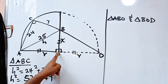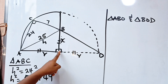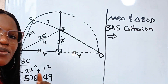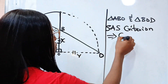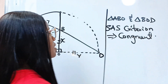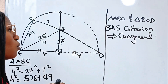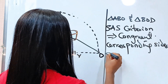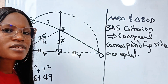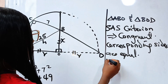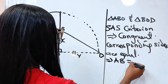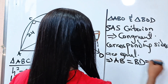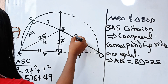Since the two triangles are congruent, their corresponding sides are equal. This implies that AB equals BD, which equals 25. So BD is 25 as well.